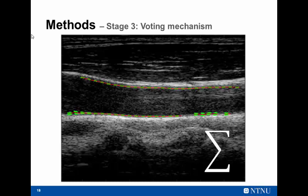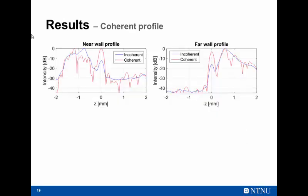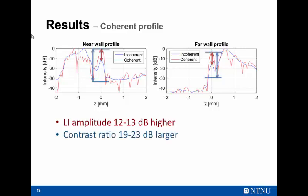So here are two coherent profiles for the previous image, for both the near and the far wall. So in the center of both graphs, you can see the LI pulse, the lumen-intima pulse. And as you can see, the amplitude of the lumen-intima pulse has increased by around 12 dB in both. But most importantly, if we look at the difference between the lumen-intima amplitude and the next line, the hyperechoic line that normally is used to segment the media-adventitia layer, we can see an increase of around 20 dB, which is quite good.